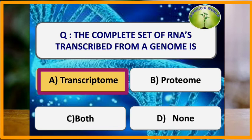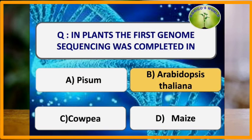The complete set of RNAs transcribed from a genome is called the transcriptome, whereas proteome refers to the complete set of proteins encoded by a genome.